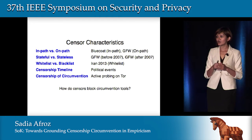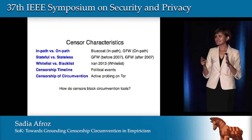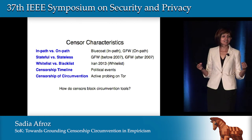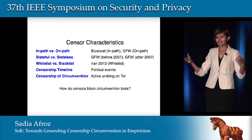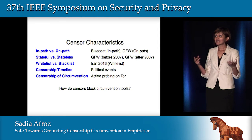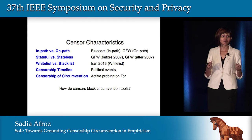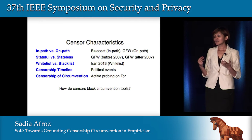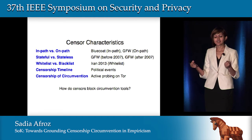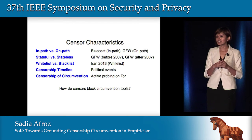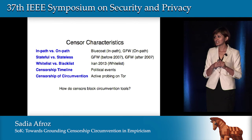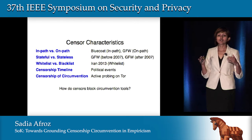A censor could also be stateless or stateful. A stateless censor cannot do packet reassembly — before 2007, the Chinese censor was stateless, so you could bypass it by breaking a packet into two. But now the censor is stateful and can do packet reassembly, so that attack no longer works. The majority of censors we studied use blacklist-based censorship. We found only two cases of whitelist-based censorship — Iran during their 2013 election, when they blocked all non-HTTP traffic.